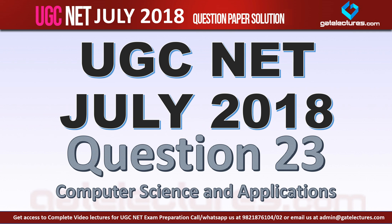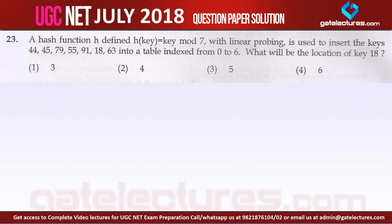In this video let us look at the solution of question number 23, which is from the data structures subject. They are given a hash function where the hash key is defined as key mod 7, so the result tells the location of an element. They are using linear probing in case of collision.